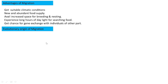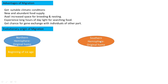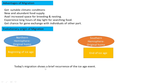Regarding the evolutionary origin of migration, one theory states that during the ice age, when conditions were warm and food was plentiful, birds' native home was in the northern hemisphere. As the ice age began and climate became very cold, they migrated to the southern hemisphere. With the end of the ice age, they returned north. The present-day migratory behavior is considered a remnant of this ice age event.